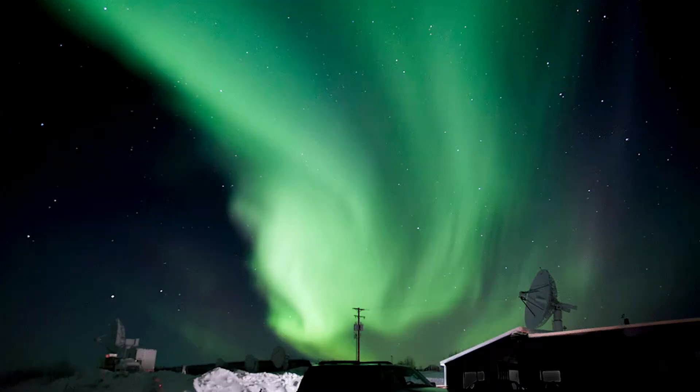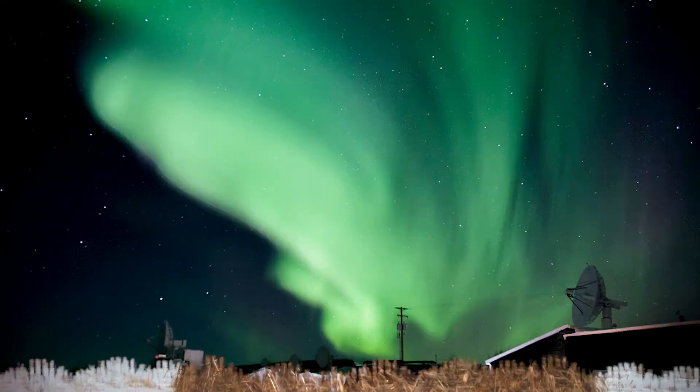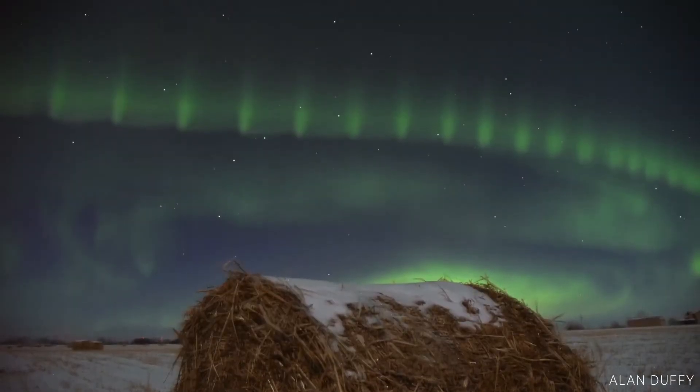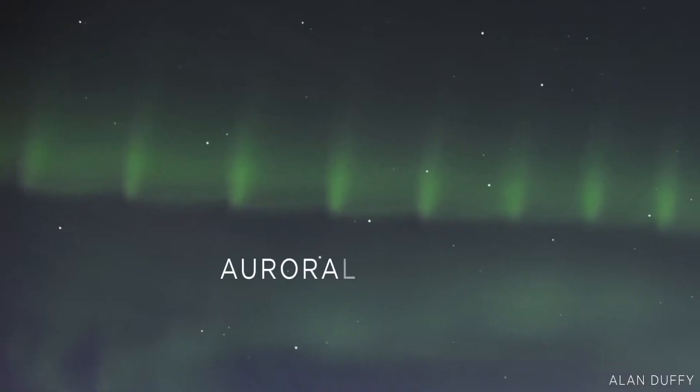Right before auroras dance in the sky, there's often an appearance of a mysterious shape. It drapes across the sky like a glowing pearl necklace. Scientists call them auroral beads.